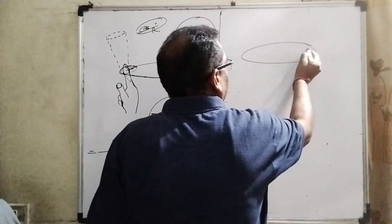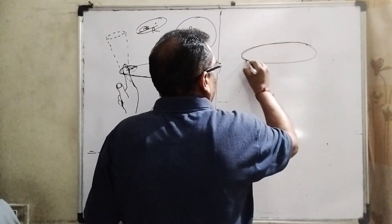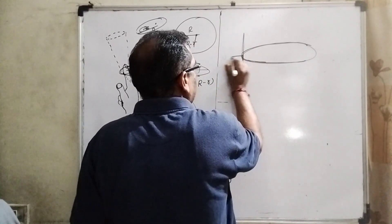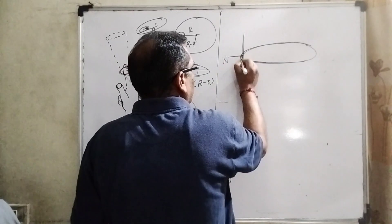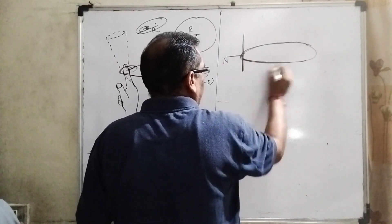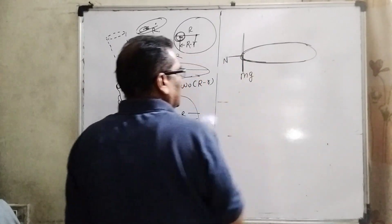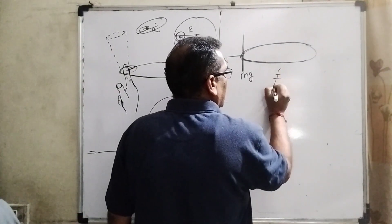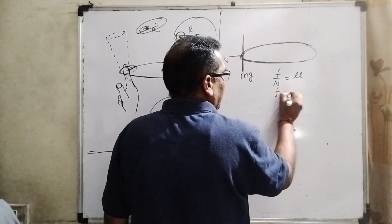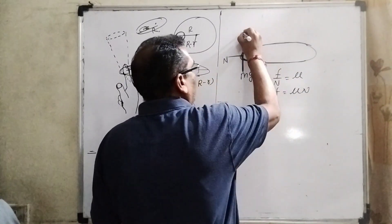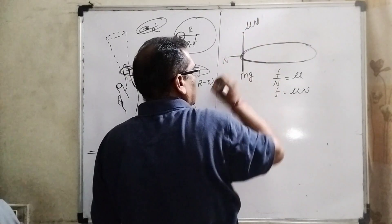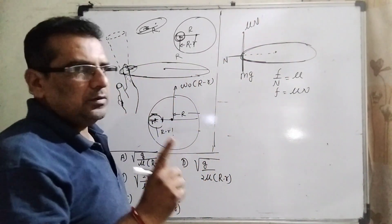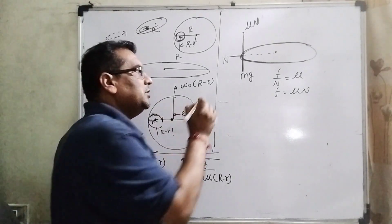The ring revolves by the finger. The normal force acts inward (toward the center), the weight Mg acts downward, and by the law of friction, friction force f = μN acts upward. These force directions are now clear.